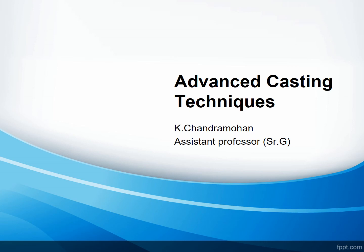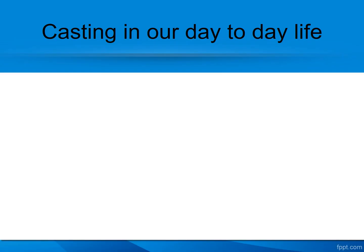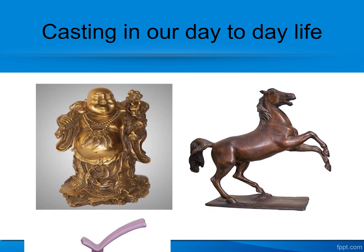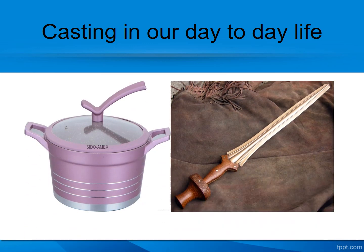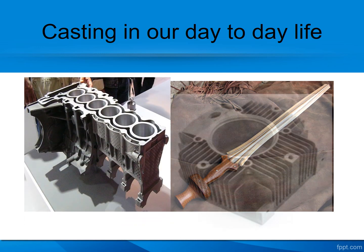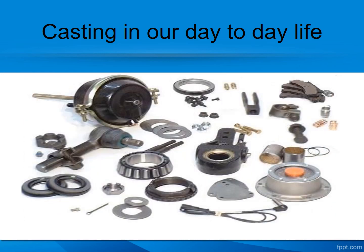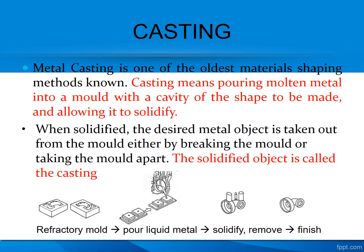Good morning students. Today we are going to discuss the modern manufacturing system — advanced casting techniques. First of all, we should know about casting in our day-to-day life. Casting objects are everywhere: idols, statues, household appliances, and even in automobile applications — engine blocks are made by casting. Casting means pouring molten metal into a mold with a cavity of the shape to be made and allowing it to solidify.